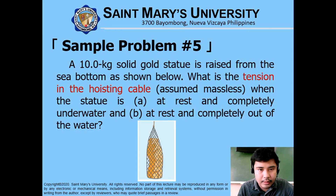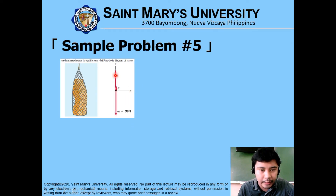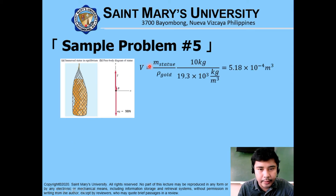Here is a sample problem to explain buoyancy. A 10-kilogram solid gold statue is raised from the sea bottom. What is the tension in the hoisting cable when the statue is at rest and completely underwater, and when it is at rest and completely out of the water? Drawing the free-body diagram, we have tension, buoyancy force B, and the weight of the statue. First, compute the volume: volume equals mass divided by density. 10 kg divided by 19,300 kg/m³ equals 5.18 × 10⁻⁴ m³.